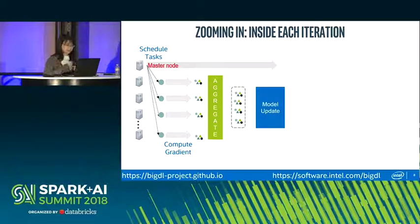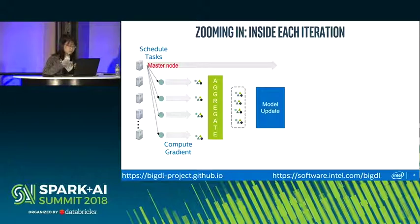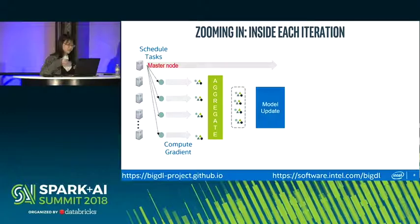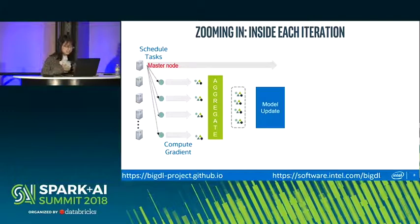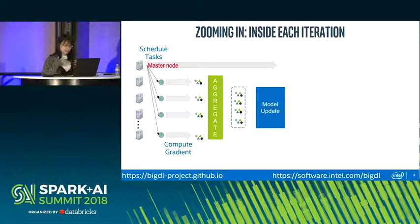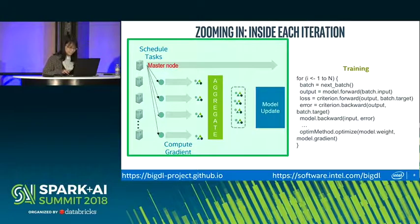Let's look at what a deep learning job looks like running on Spark. At the beginning of each iteration, the master code generates and launches a series of Spark tasks. These tasks run on the workers to compute the gradients, and then these gradients need to be aggregated. The aggregated gradients are then used to update the model.